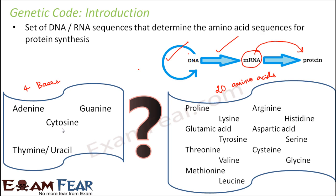Genetic code is the set of DNA or RNA sequences that determine the amino acid sequences for protein synthesis. You would have noticed that in DNA replication, the underlying concept was complementary base pairing — easy to create a copy because you just create another strand with complementary bases. A similar concept applied in transcription. But in translation, complementary base pairing will not help us because protein is not made up of nitrogenous bases — proteins are made up of amino acids. That is why we first understand genetic code before talking about translation.